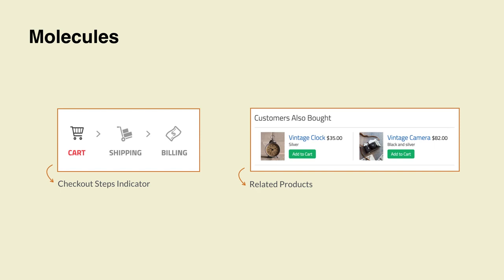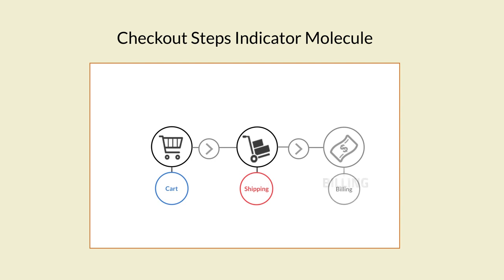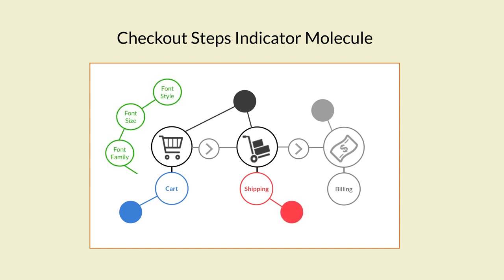Let's view the checkout steps indicator in more detail. The atoms, or inner modules, are the icons used for each step, the icons used to connect the steps, and the text used under the icons. Color is used to differentiate the active from the inactive steps, and the typography used involves the font family, size, and style. These atoms by themselves are pretty basic, but once grouped together provide meaning and functionality, allowing the user to know what's the current step they're in, which step lays ahead, and a way to navigate those steps.